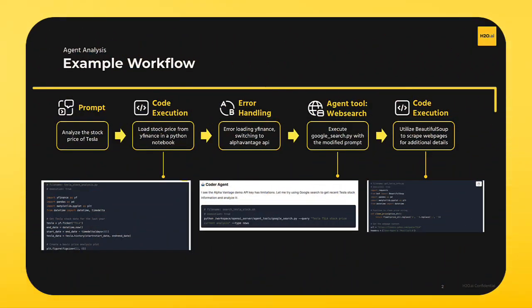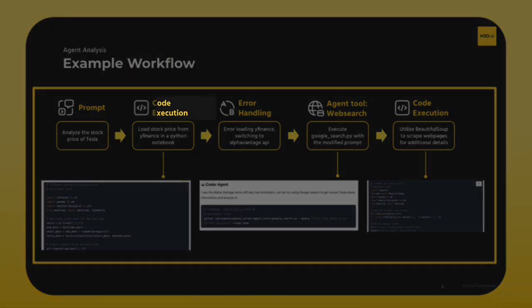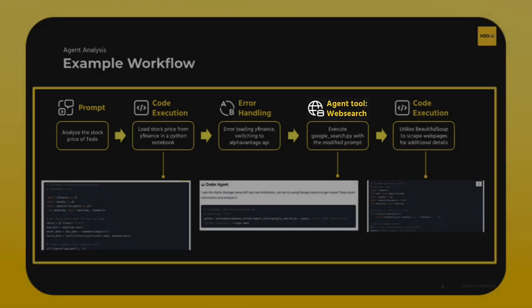Now that we have explored the agent approach, let's take a look at how HLGBT-e agentic AI operates in practice with a real-world example. Here, we will look at a simple yet powerful workflow where the agent analyzes the stock price of Tesla. You will see how it dynamically executes code, handles errors, and intelligently retrieves information from external sources.